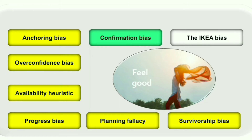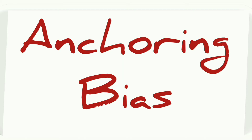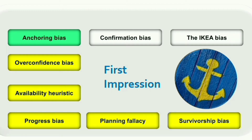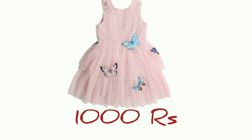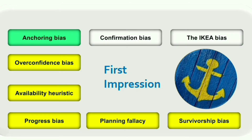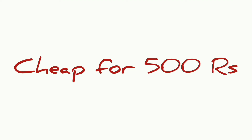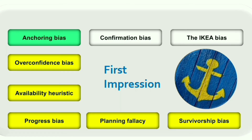The next one is anchoring bias, which we can relate to a first impression bias. When we see a thing and then see a second thing, we rely too much on the first thing and judge the second based on it. For example, if we go shopping and see a dress for a thousand rupees, then see a second dress for 500 rupees, we tend to judge the second dress as cheap based on that first data point. This is anchoring bias.